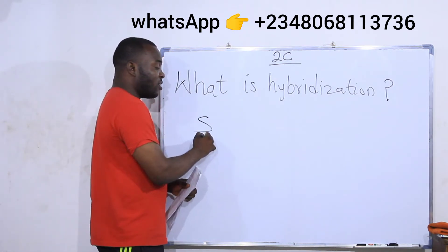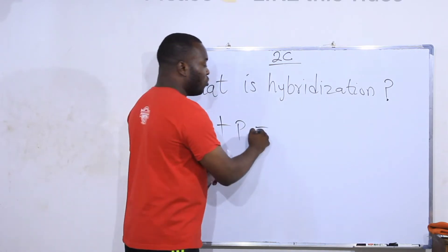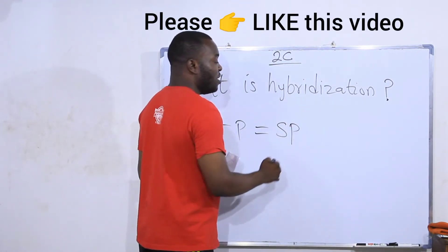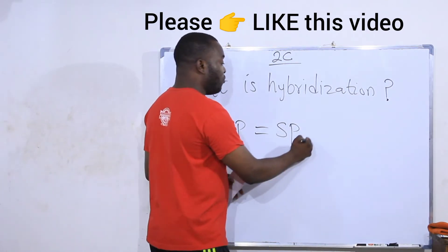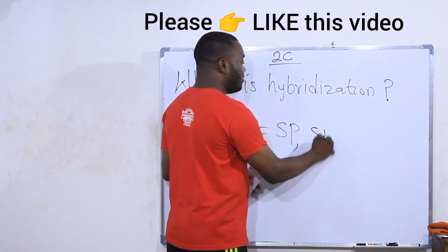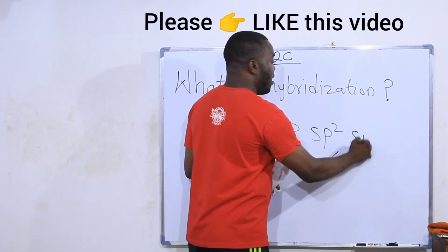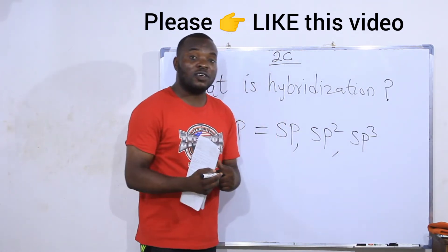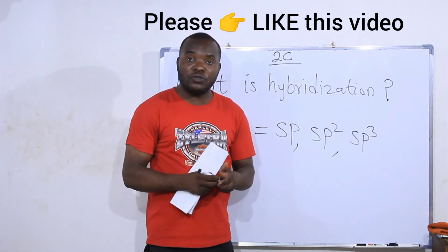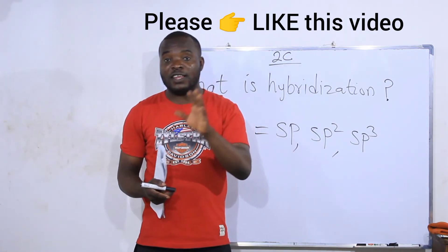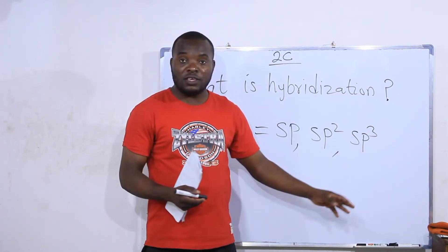For instance, an S orbital can mix up with a P orbital to give us SP hybrid orbitals. It can also give us SP2 hybrid orbitals, or SP3 hybrid orbitals. These are different orbitals formed when the electrons of the S combine with the electrons of the P orbitals.